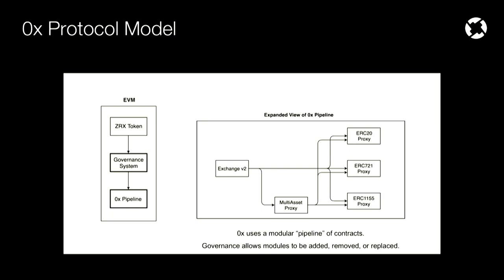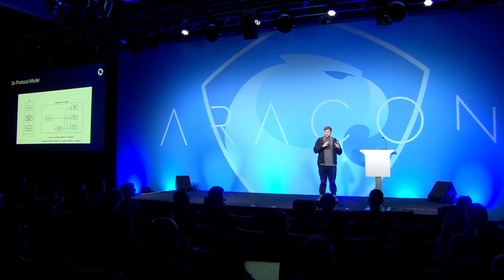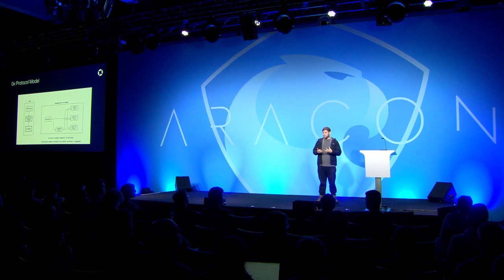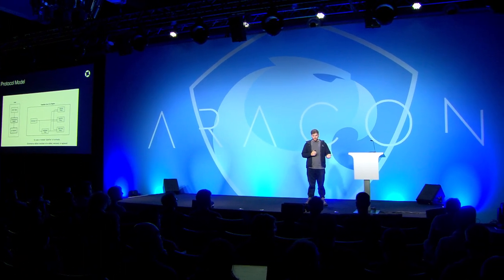Let's zoom in on the 0x pipeline and see what's inside that black box. On the right, we have a number of different Ethereum contracts all interacting with each other. You can think of this system as a modular pipeline broken into different segments. Governance allows us to add, remove, or replace these modules from the pipeline. At a high level, cryptographically signed orders — which signal your intent to enter into a trade — enter on the left side into the exchange contract. A cascade of function calls goes down the pipeline, and then users' balances are modified at the right side of the pipeline.